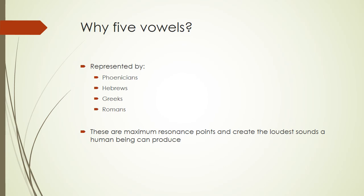The five vowels were represented by the Phoenicians, the Hebrews, the Greeks, and the Romans — they are maximum resonance points, creating the loudest sounds a human being can produce, with A being the loudest. The A is the sound uttered by an infant at birth, which is why it was placed first in the alphabet. The O, or omega, is the last sound — the alpha and the omega, the beginning and the end — as A is the highest resonance point while O is closer to a dying sound.